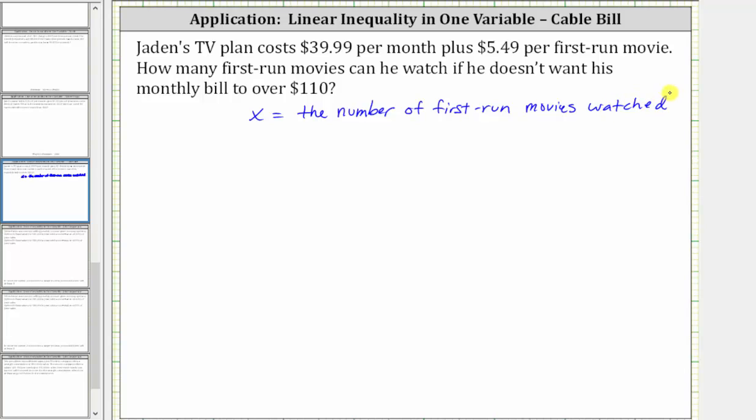Now to write an expression for the total bill amount. There's the flat fee of $39.99, and then plus the fee for watching the first-run movies, which is $5.49 times the number of first-run movies watched. In our case, that's x, so 5.49x represents the cost of watching the first-run movies.